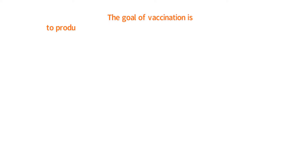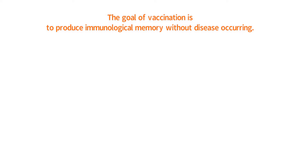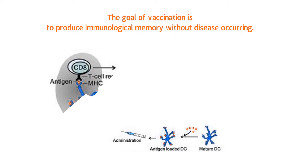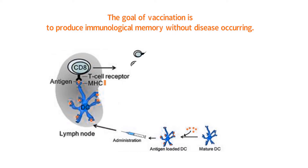The goal of vaccination is to produce immunological memory without disease occurring. Therefore, the strongest immune response a vaccine can generate is a response that leads to antigen presentation on MHC-2 to initiate the immune response that will produce memory T and memory B cells.